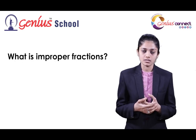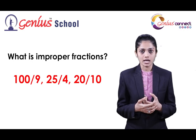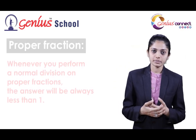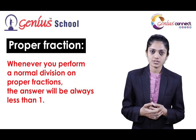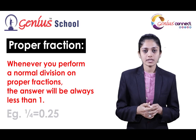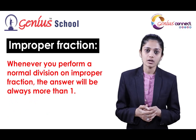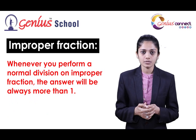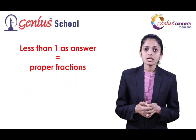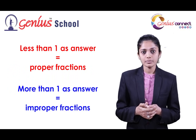What are improper fractions? Nothing is actually improper about them — they are just called improper fractions. Examples include 100 by 9, 25 by 4, and 20 by 10. Don't confuse proper and improper fractions. When you perform a normal division on a proper fraction, the answer will always be less than 1. For example, 1 divided by 4 gives 0.25. When you perform a division on an improper fraction, the answer will always be more than 1. For example, 5 divided by 4 gives 1.25.